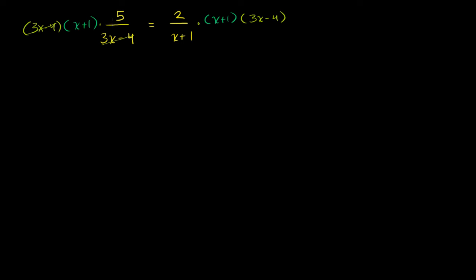The left-hand side is just going to be x plus 1 times 5, or 5 times x plus 1. The right-hand side, this x plus 1 cancels, leaving 2 times 3x minus 4. If you just look at it, it looks like we did something called cross-multiplying — 5 times x plus 1 is equal to 2 times 3x minus 4. But the reality is we just multiplied both sides by each expression. Now we just have a straight-up linear equation.